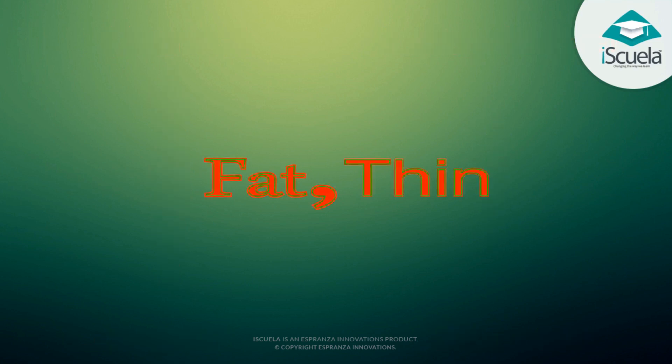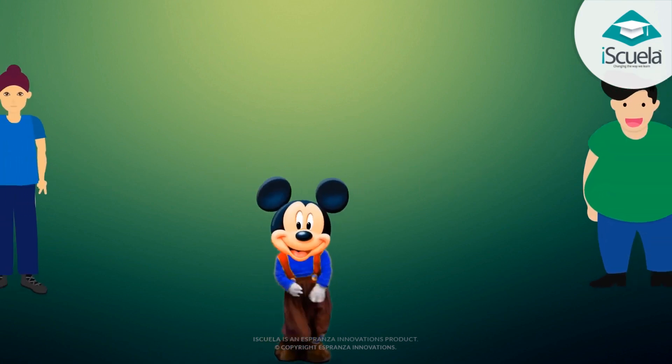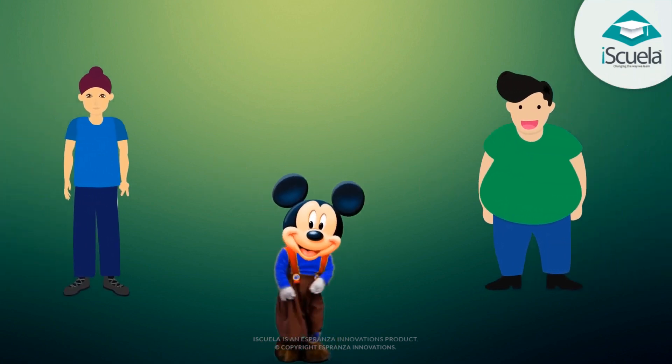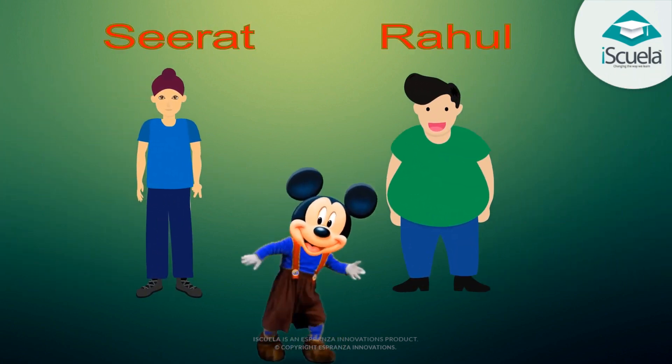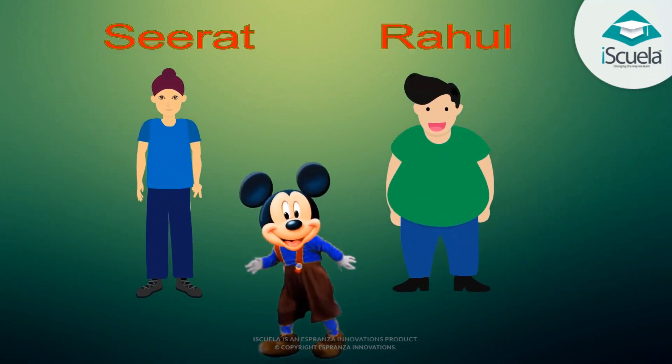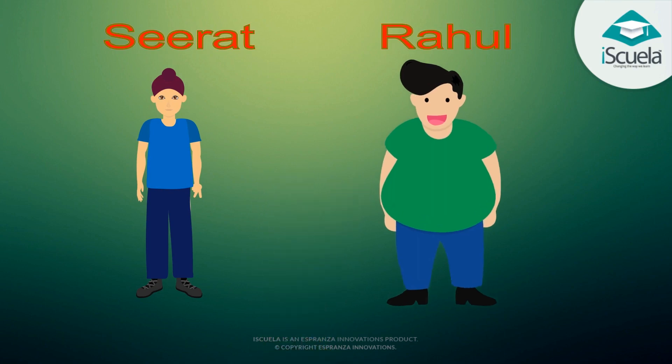Good. My dear children, now let's learn about fat and thin. Who is fatter and who is thinner? Rahul is fatter. Seeret is thinner.